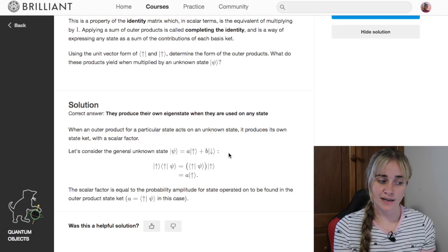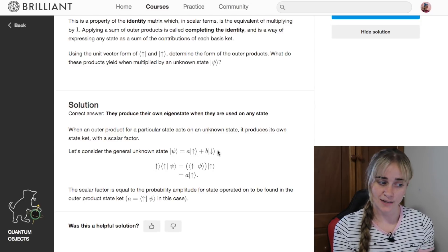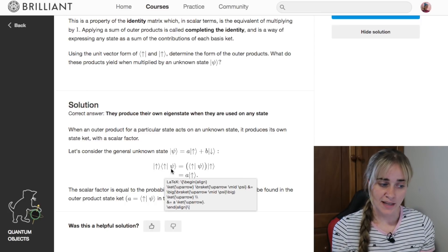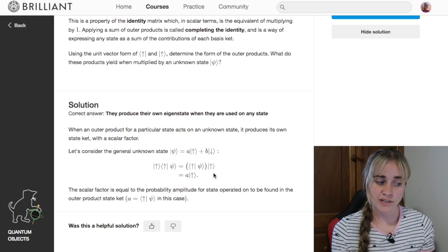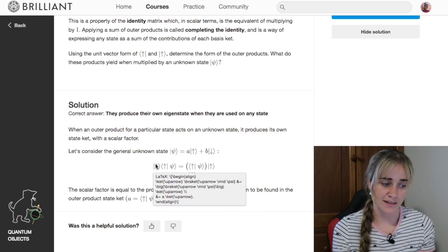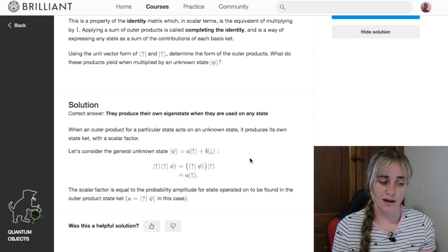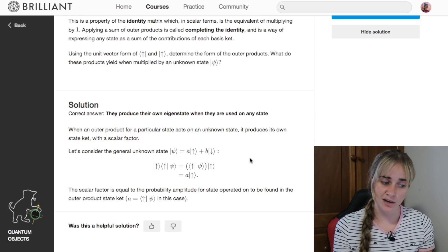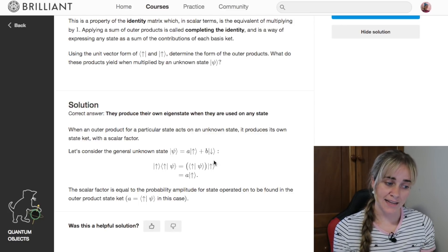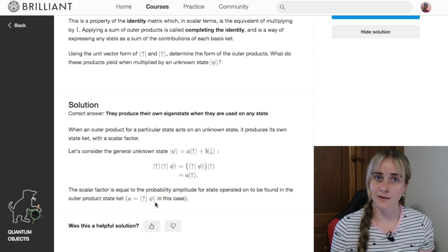We can work through this a little bit more slowly. We started with our familiar unknown state psi which is made up of A amount of spin up and B amount of spin down. We applied the outer product of spin up to it, and this line here is just rearranging it. We've taken that ket that's hanging out the front and put it behind, and that gives us an inner product times a ket which we recognize as being A times the ket because we know that this inner product here is equal to A.